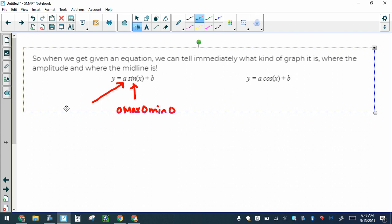This A out in front tells you what the amplitude is. And this B at the end tells you what the midline is. That is enough information to draw it, and we'll draw some here in a second.